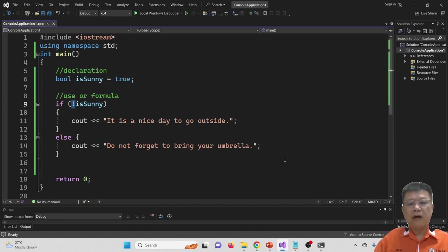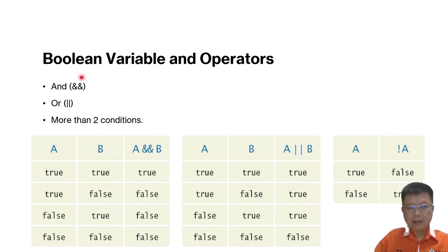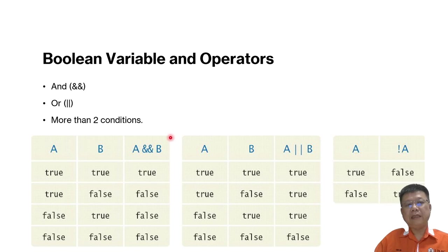Let's continue with other operators. Besides NOT, we also have AND, represented by double ampersand (&&), and OR, represented by two vertical bars (||). The AND truth table is: true AND true is true; true AND false is false; false AND true is false; false AND false is false.